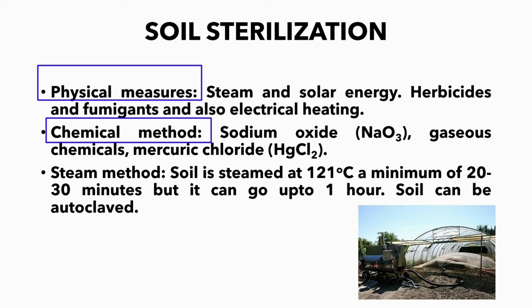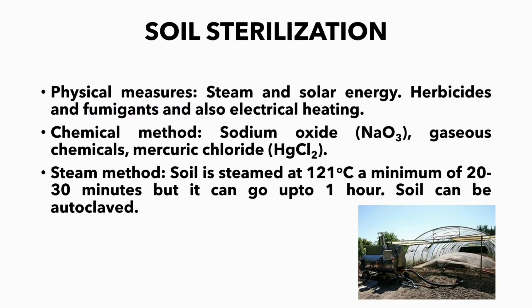Physical measures include steam and solar energy, and also include herbicides, fumigants, and electrical heating. The chemical methods include sodium oxide, gaseous chemicals, mercury chloride, etc. Now let us see the steam method.